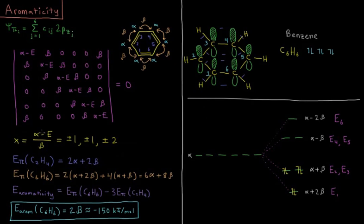If we define the quantity x, such that x is alpha minus E over beta, x equals in this determinant plus or minus 1, plus or minus 1, and plus or minus 2. So out of our determinant it is six-dimensional. We're taking a linear combination of six orbitals, so we get six orbitals back with six distinct energy values. We get two singly degenerate values at alpha plus 2 beta and alpha minus 2 beta, reminding ourselves that beta is about negative 75 kilojoules per mole. And two doubly degenerate orbitals at alpha plus beta and alpha minus beta for our six total orbitals.